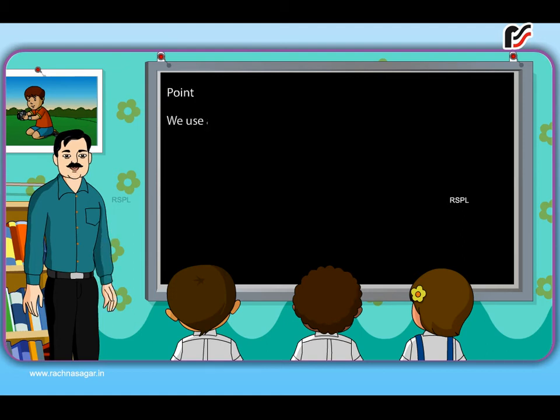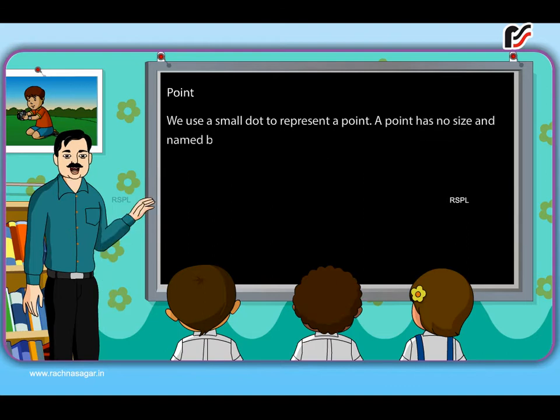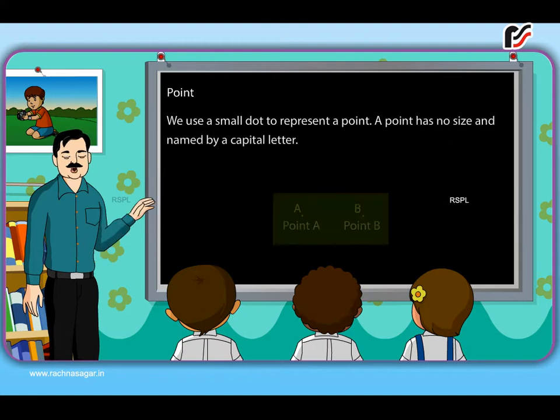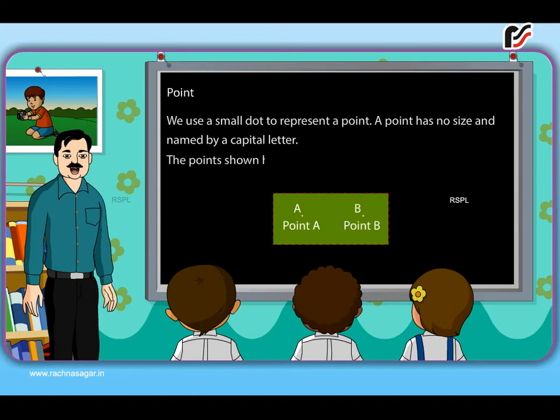Point. We use a small dot to represent a point. A point has no size and named by a capital letter. The points shown here are point A and point B.